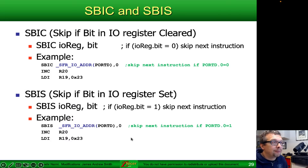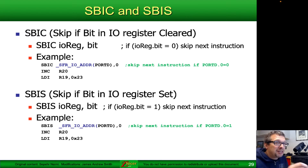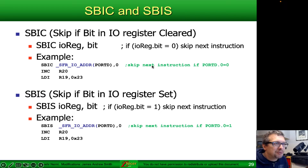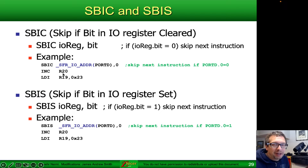Things get more interesting for decision making with the skip-if-bit-in-IO-register-cleared instruction (SBIC) and skip-if-bit-in-IO-register-set (SBIS). These let you test the individual value of, say, a button connected to a single bit on a port. For example, SBIC SFRIO address port D comma 0 will skip the next instruction if port D bit zero is equal to zero; otherwise, it increments the value in R20.